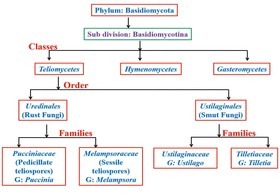Coming to the classification — we have to remember the classification before going into detail about the differences. Where are the smut fungi placed? These smut and bunt fungi are placed in the order Ustilaginales. They are placed in the class Teliomycetes, which is divided into two orders: the Uredinales and Ustilaginales. Uredinales includes rust fungi and Ustilaginales includes smut fungi.